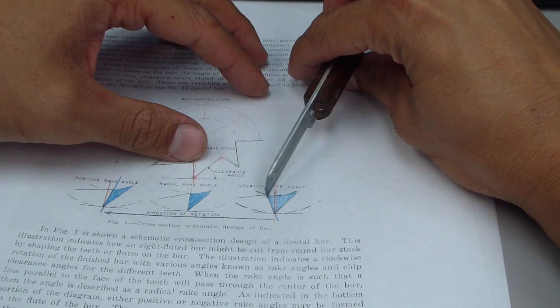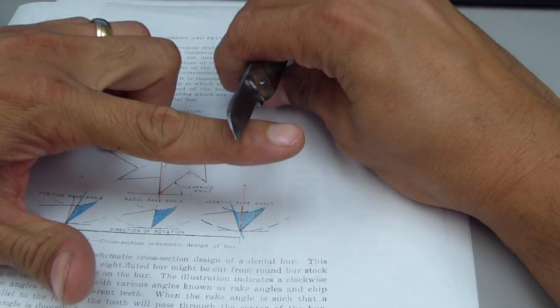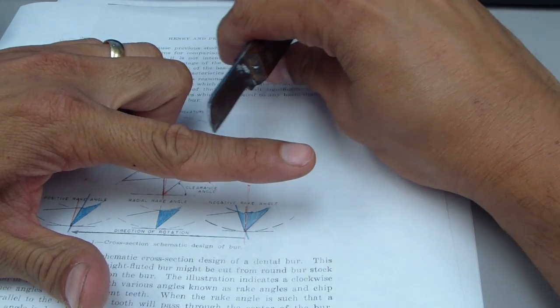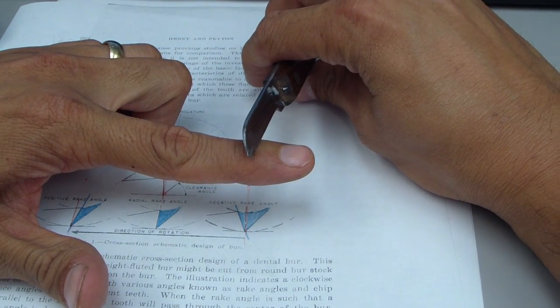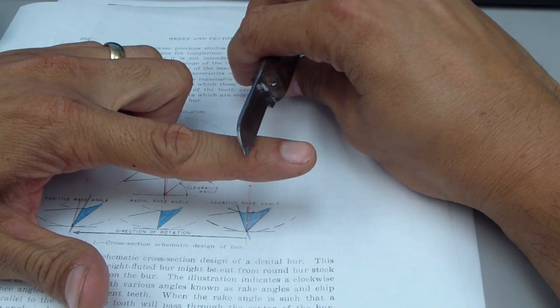Versus a negative rake angle which has more material as you can see here in the design. But you're getting more of a scraping motion relative to the path of travel. So it may be smoother, it's not going to cut as efficiently but it might actually last longer.